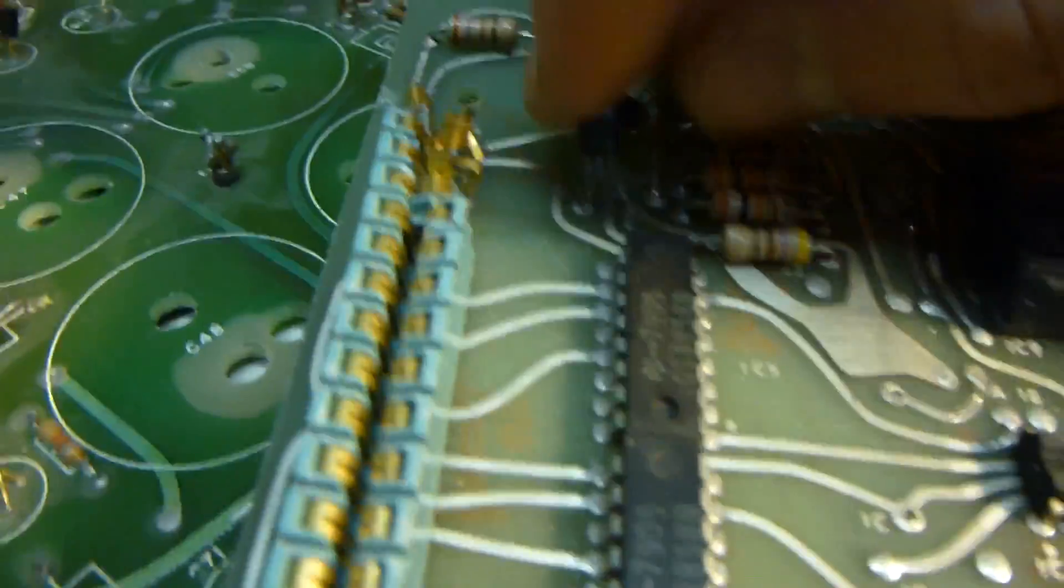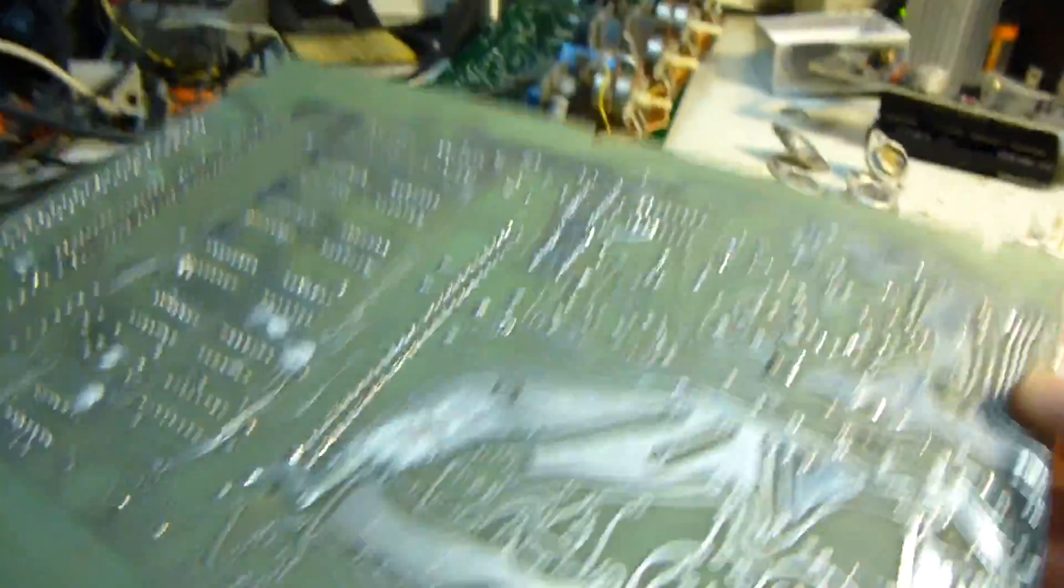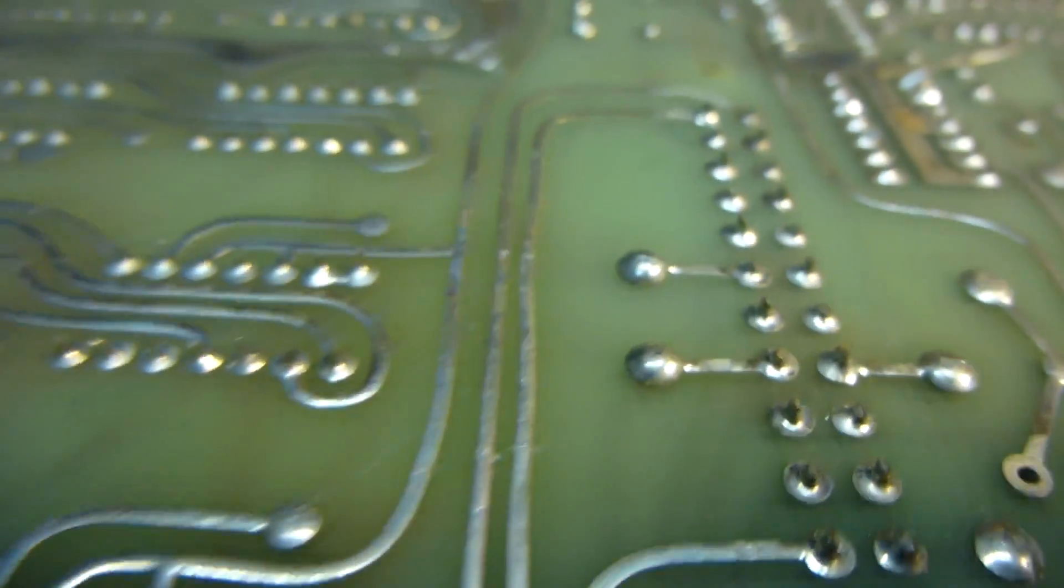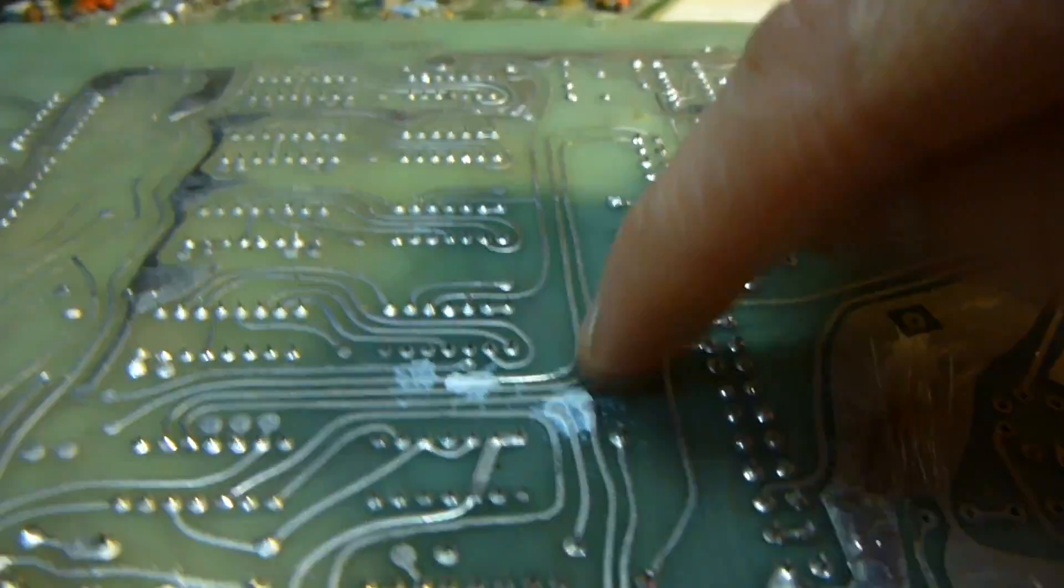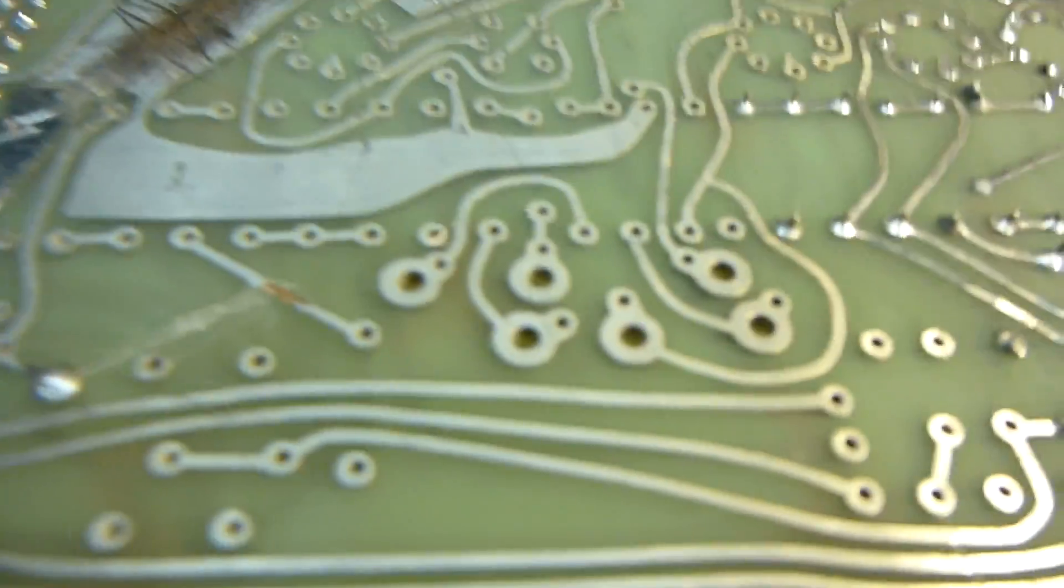But some of these transistors on these old boards have color codes on them which I'm not really sure how that works. Yeah, these ones have blue and green. But this board I'm pretty sure it was not done using any software. I'm pretty sure it was done by somebody with a drafting table because if you look at the traces they're not straight.